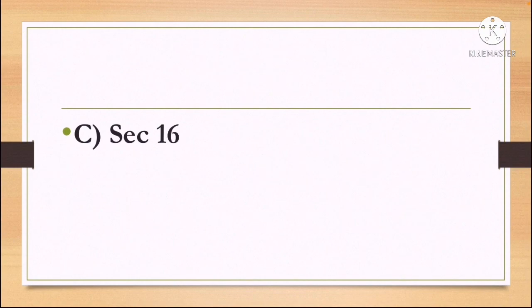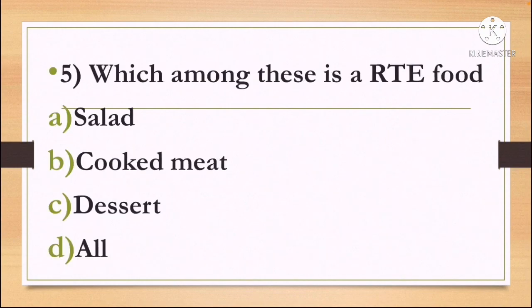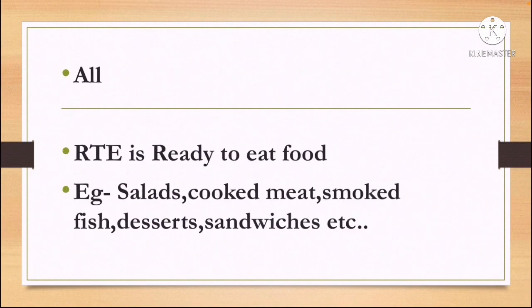Next question: which among these is a RTE food? Option A: Salad, Option B: Cooked Meat, Option C: Dessert, and Option D: All. The correct answer is Option D, All. RTE stands for Ready to Eat Food. Examples include Salads, Cooked Meat, Smoked Fish, Desserts, Sandwiches, etc.